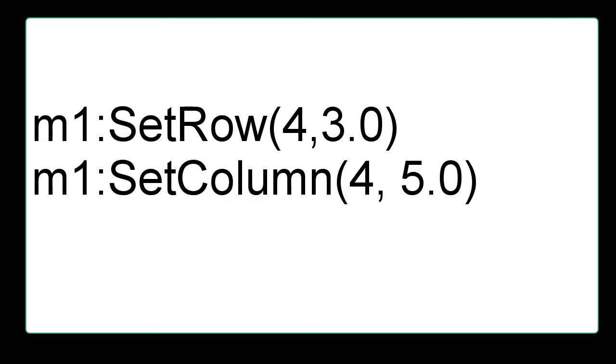Use the set command to change a few rows and columns of matrix m one. Type: lowercase m, one, colon, capital S, lowercase e-t, capital R, lowercase o-w, parentheses, four, comma, three point zero, close parentheses.